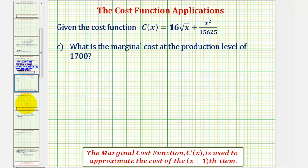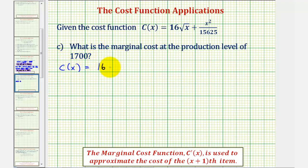Part C: what is the marginal cost at the production level of 1,700? The marginal cost function is the derivative of the total cost function, and this is often used to approximate the cost of the x plus 1th item. To find the derivative, we write c of x equals 16x to the power of 1/2 plus x squared divided by 15,625. In this form, we can apply the power rule of differentiation.